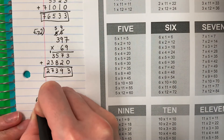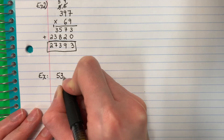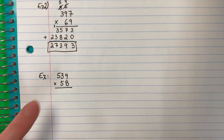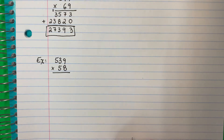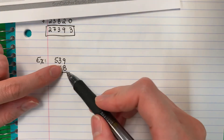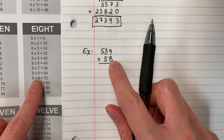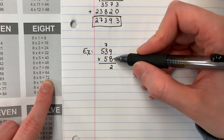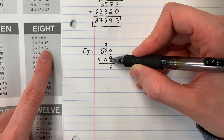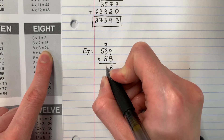Example three — our final example for this video. Five hundred thirty-nine times fifty-eight. Quinientos treinta y nueve por cincuenta y ocho. So let's go ahead and get our table here. Remember we're going to focus on the eight first. Vamos a enfocar en el ocho primero. Eight times nine is seventy-two. Setenta y dos. So I'll put two, seven. Eight times three is twenty-four. Ocho por tres, veinticuatro. Plus seven, más siete. Twenty-four plus seven is thirty-one. Treinta y uno. So one, three.